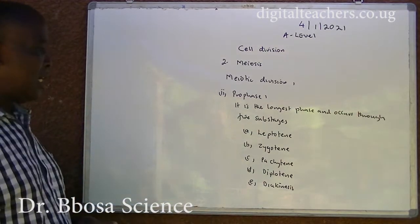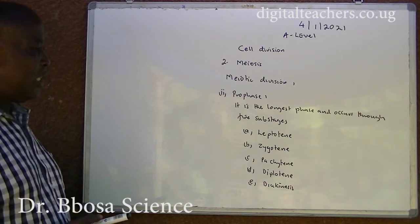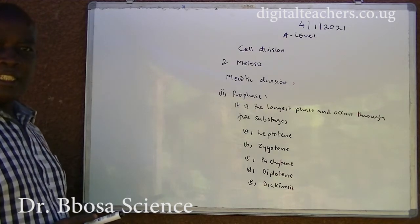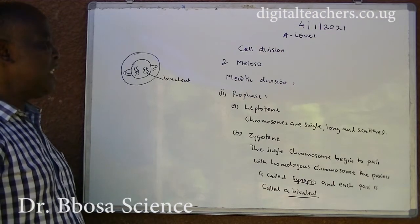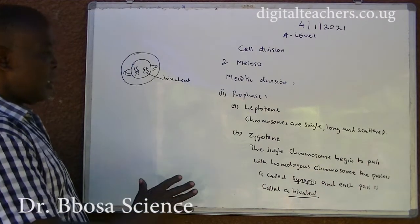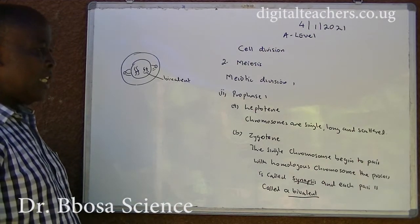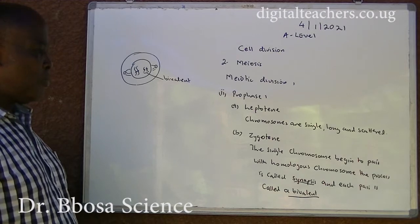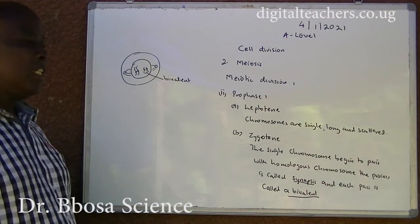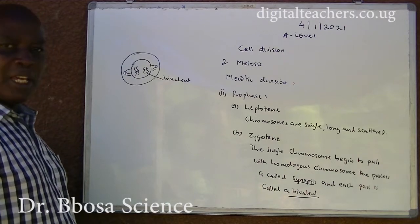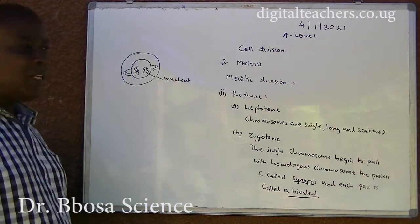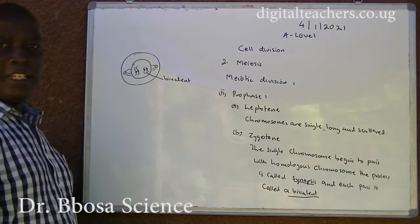The sub-stages of prophase I are: Leptotene, Zygotene, Pachytene, Diplotene, and Diakinesis. In Leptotene, chromosomes are single, long and scattered. In Zygotene, single chromosomes begin to pair with homologous chromosomes — this process is called synapsis, and each pair is called a bivalent.